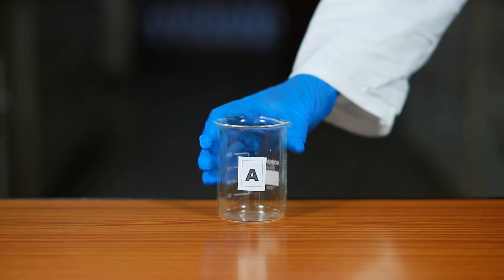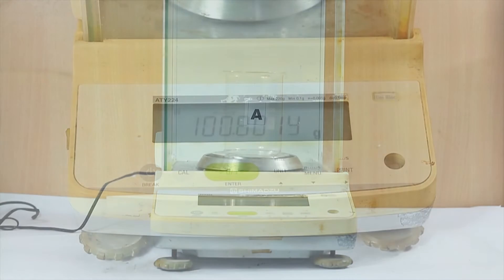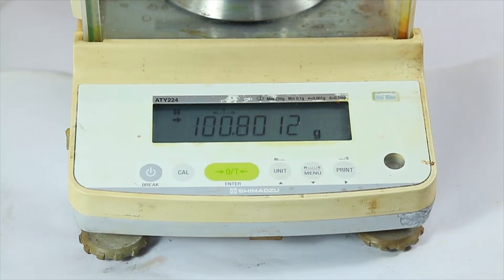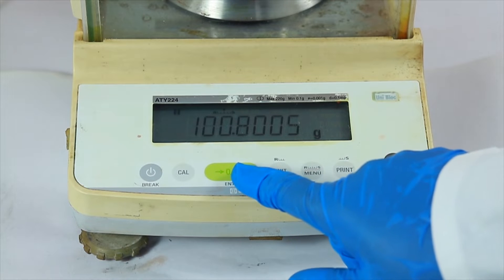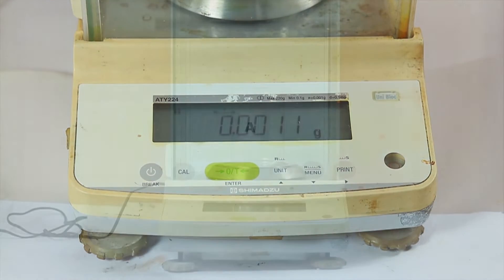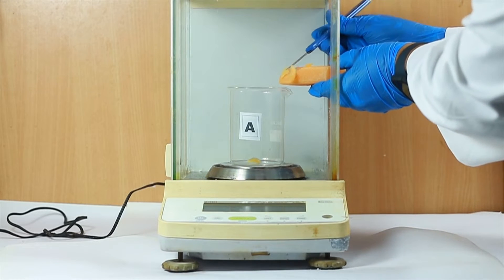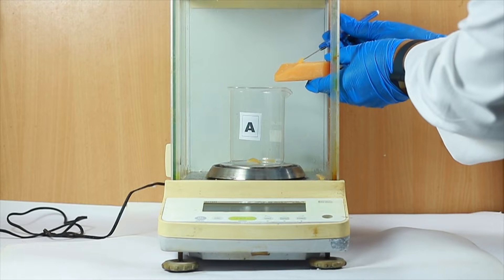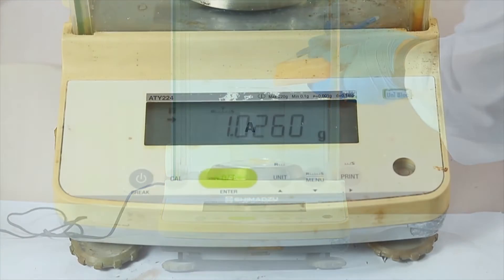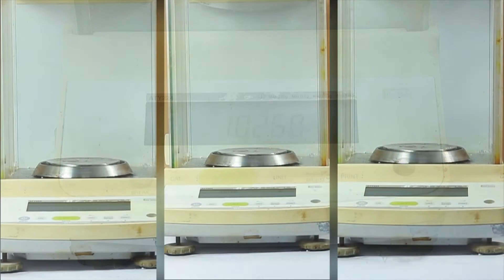Put beaker A on the electronic weighing balance. The weighing balance shows the weight of the empty beaker. Use the tare button to show a reading of 0.00 grams. Add soap A into the beaker by making it a small piece using a cutter knife until the electronic balance shows a one gram reading. Repeat the steps for B, C, and D.